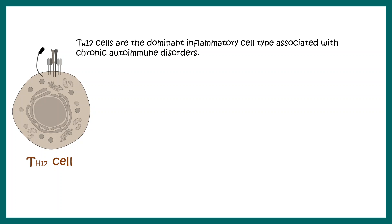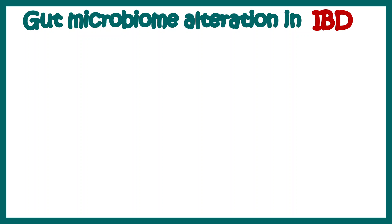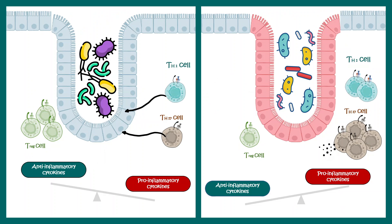TH17 cells are associated with many autoimmune disorders. They secrete interleukin-17 and interleukin-22, both of which lead to inflammation in several tissues or organs. Recently, researchers found that the gut microbiome is altered in patients with IBD — a very important discovery. It is not yet clear whether the altered gut microbiome is the cause of IBD or merely associated with it. Current research points to a compensatory balance of immune systems in the intestine.